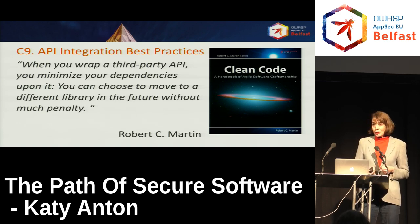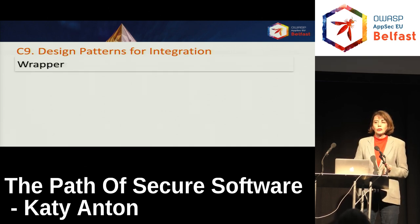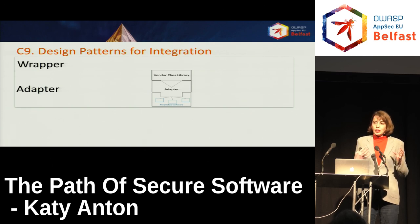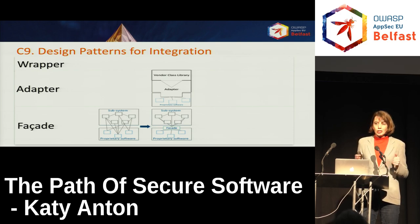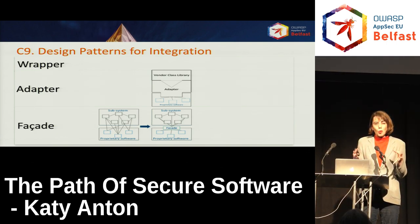Depending on the complexity of the third-party libraries, you have several software design patterns. You can use a wrapper to expose only the functionality you need and hide unwanted behavior. For libraries that provide a different interface from what your software needs, use the adapter pattern. For complex systems, use a facade — which helps simplify the connection between your own software and the complex system. In the facade class, you have one point where you can apply extra controls easily.